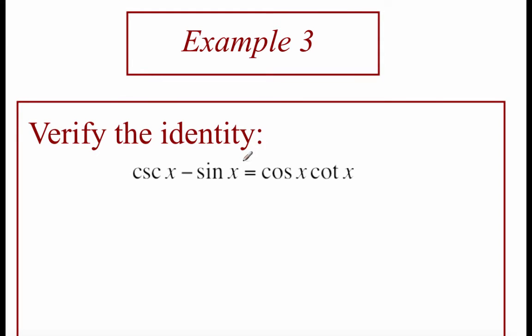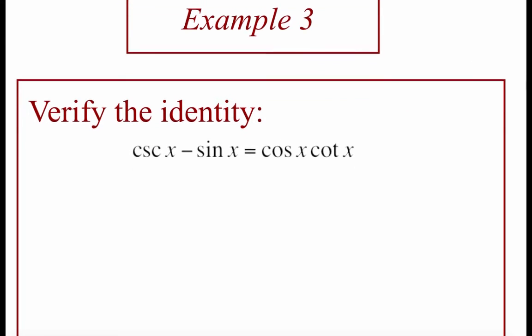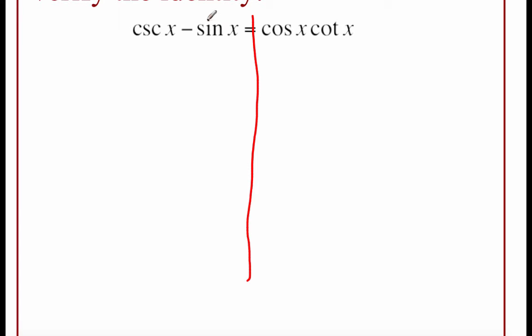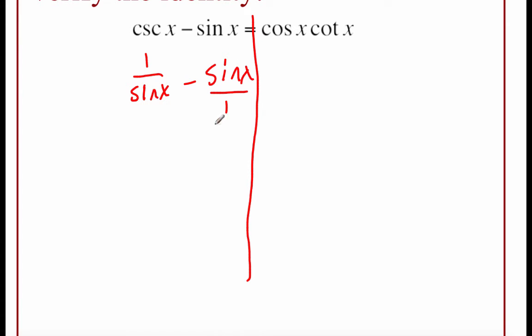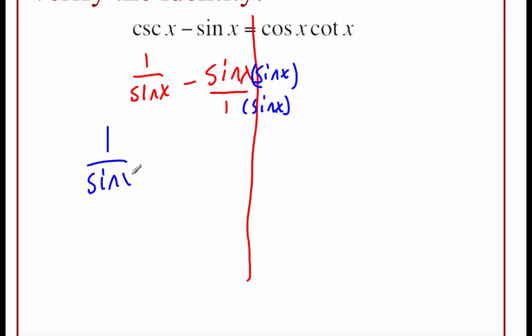In example three, we've got cosecant of x minus sine of x, and we're going to show that's the same as cosine of x times cotangent of x. Drawing a line down the middle again. On the left-hand side, I see a cosecant and a sine — I want to get those to be the same trig function. So I'm going to rewrite the cosecant as 1 over sine of x, minus sine of x. Viewing sine of x as a fraction over 1, we need common denominators — so I'll multiply the right-hand fraction top and bottom by sine of x. That gives us 1 over sine of x minus sine squared of x over sine of x.